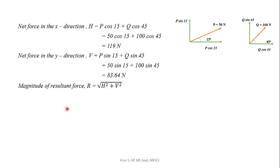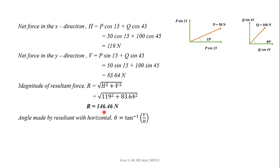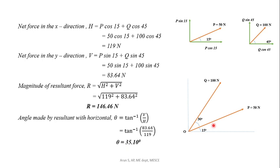The magnitude of resultant force R is equal to the square root of H squared plus V squared. That is the square root of 119 squared plus 83.64 squared, giving us R equal to 146.46 Newton. The angle theta is tan inverse of V by H, that is tan inverse of 83.64 divided by 119, giving theta equal to 35.10 degrees.